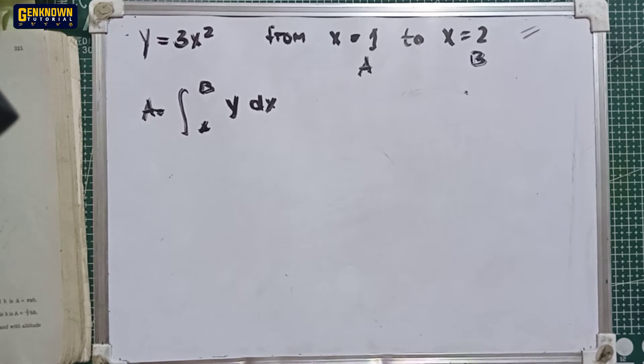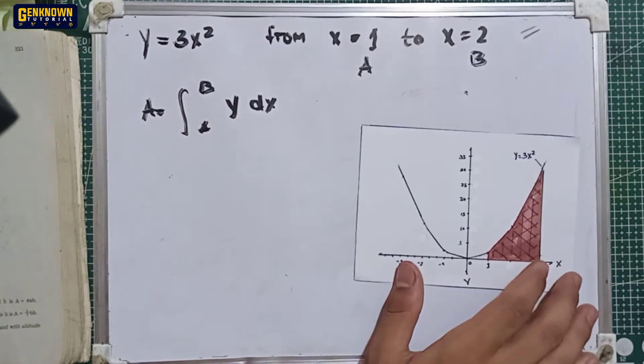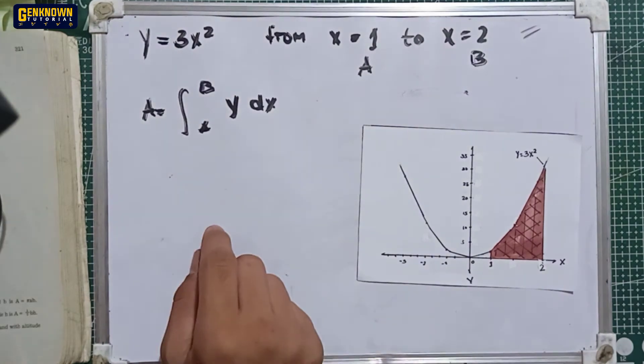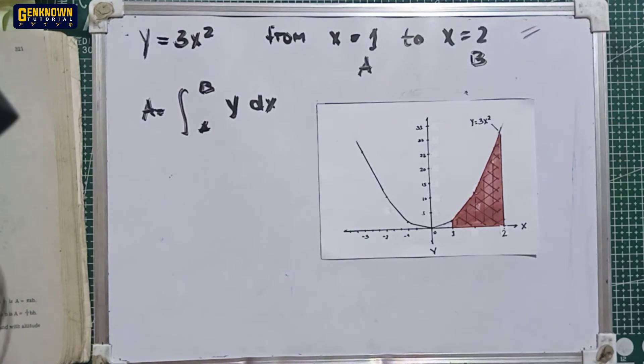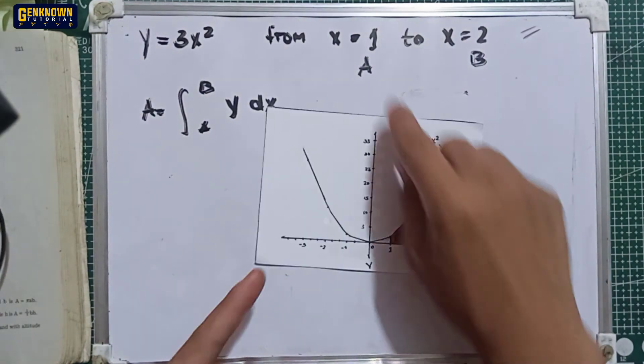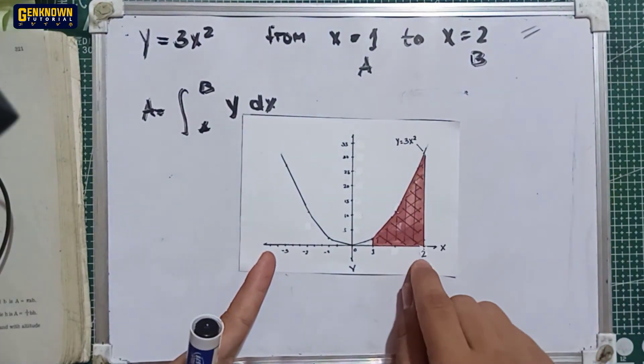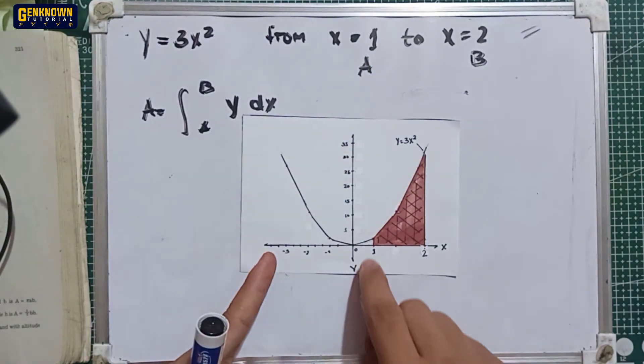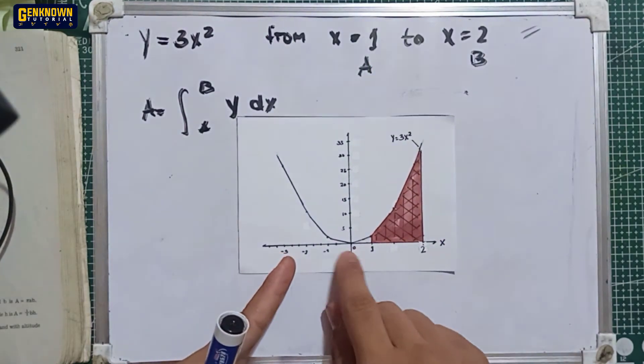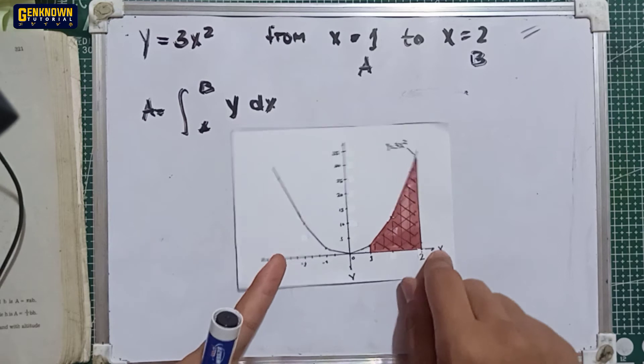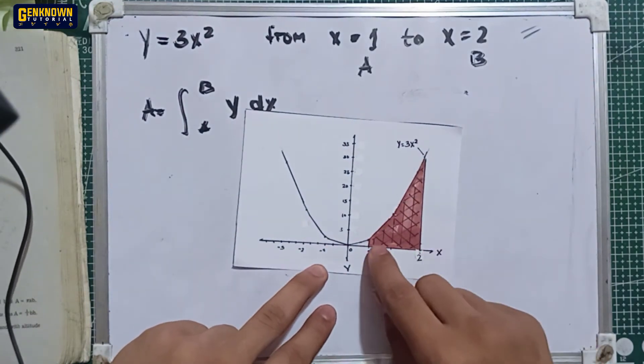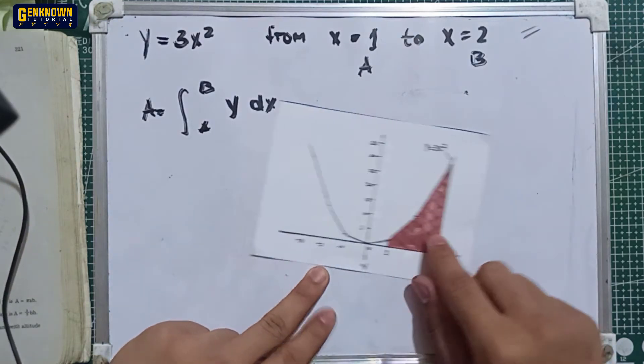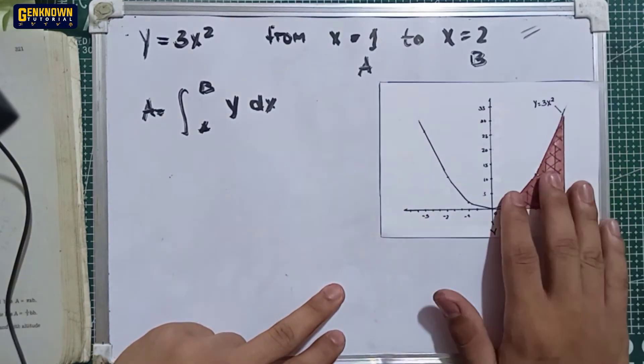If we graph the equation, kikita natin dyan na here is a parabola equation. So ganito yan, with the vertex 0, 0. Vertex at 0, 0 and opening upward. So we have the upper limit, positive 2, dito yan. And the lower limit, positive 1, dito. So yung pagitan lang nung Cartesian natin or nung abscissa natin at nung mismong curve natin. So ito yung shaded area na part. Yan yung hinahanapan natin ng area.